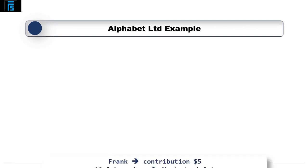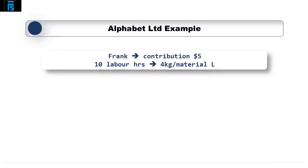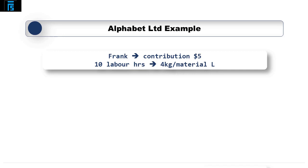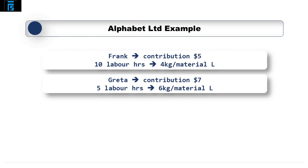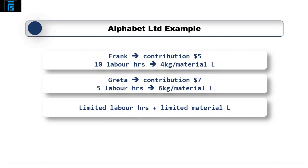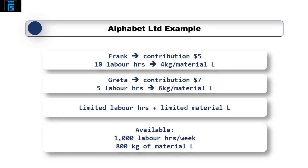Alphabet Limited makes two products: the franc and the greeter. Each franc generates contribution of $5 and takes 10 labour hours to make and 4kg of material L. Each greeter generates $7 of contribution, uses 5 labour hours and 6kg of material L. Alphabet wants to maximise contribution but there is a limited number of labour hours and also a limited amount of material L available, so they cannot meet maximum demand for both franc and greeter. They have 1000 labour hours per week and 800kg of material L available.